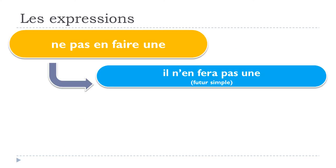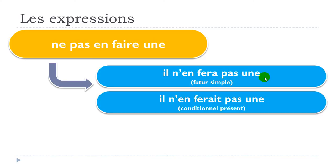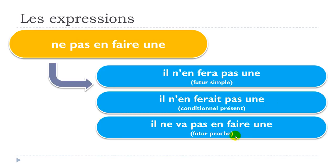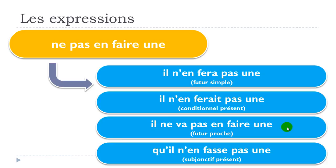Future simple: il n'en fera pas une. Conditionnel présent: il n'en ferait pas une. Future proche: il ne va pas en faire une. Subjonctif présent: qu'il n'en fasse pas une.